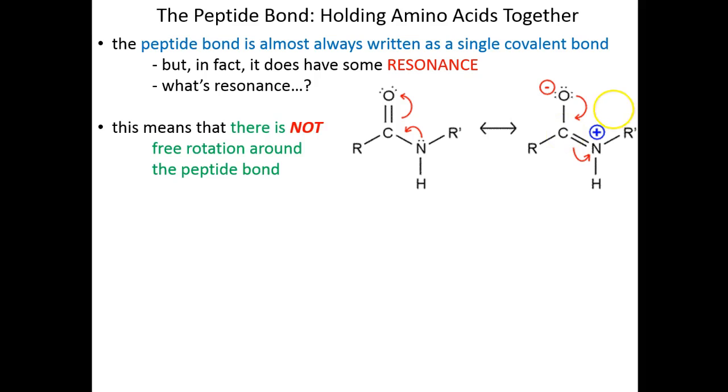What winds up happening is you get basically semi-double bond characteristics at each location. The bond between this carbon and oxygen is not quite a double bond but certainly not a single bond either—it's like a 1.5 bond because that double bond is being shared. The same is true of the peptide bond itself.